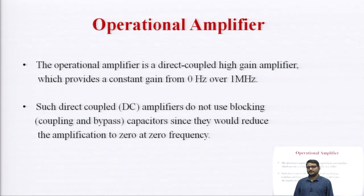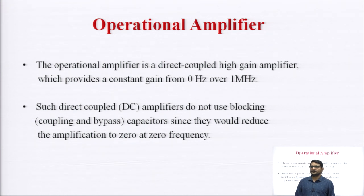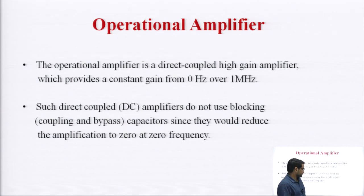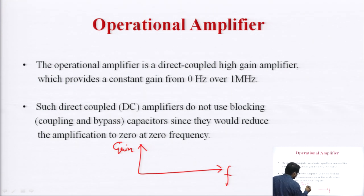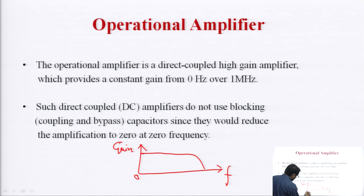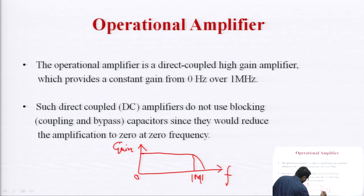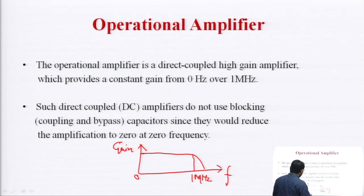Such direct-coupled amplifiers do not use blocking or bypass capacitors because they would reduce the amplification at zero frequency. If you plot the gain versus frequency curve — the frequency response of the operational amplifier — we find a typical graph starting from zero hertz where the gain is constant up to one megahertz.